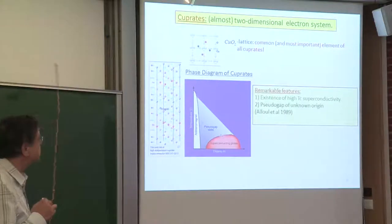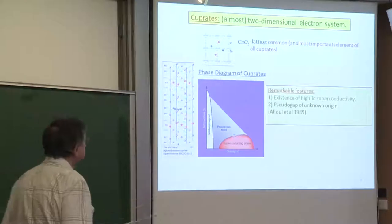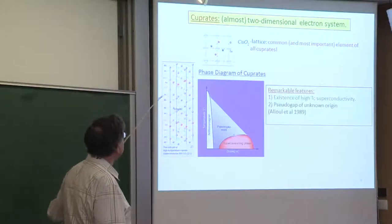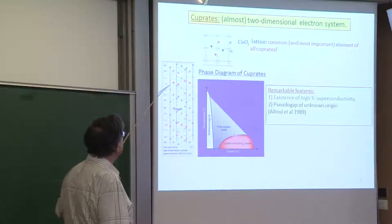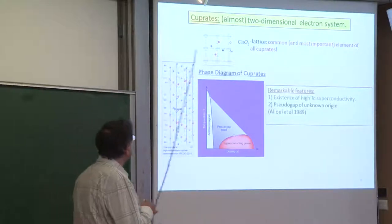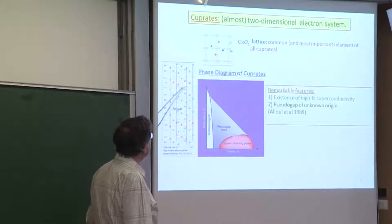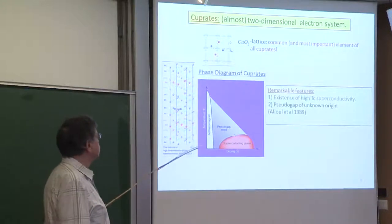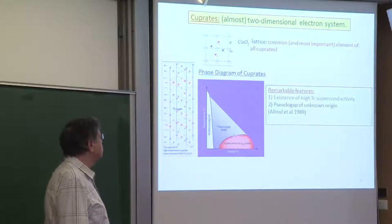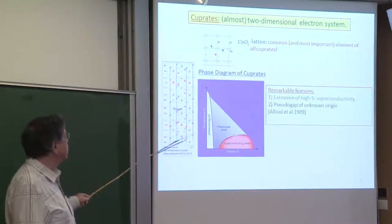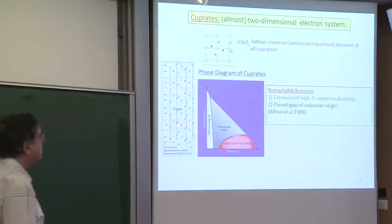The number of opinions about cuprates is huge. From the beginning, in these cuprates — this is the structure of one of them — the most important thing is that there is some lattice consisting of two-dimensional layers, with the elementary cell consisting of copper atoms and oxygens. Already for 25 years people speak of the phase diagram, though if one goes into details it is considerably more complicated.